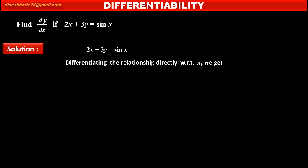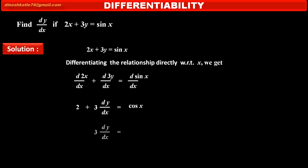Differentiating the relationship directly with respect to x, we get: derivative of 2x with respect to x, plus derivative of 3y with respect to x, is equal to the derivative of sin x with respect to x. Derivative of 2x is 2, plus derivative of 3y — that is 3 into dy by dx, as y is the function of x — is equal to cos x.